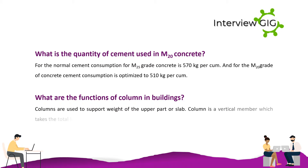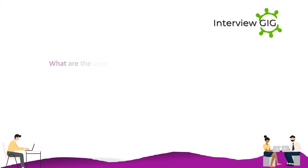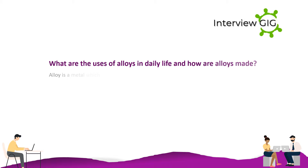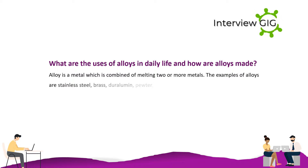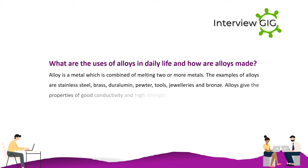What are the functions of columns in buildings? Columns are used to support the weight of the upper part or slab. A column is a vertical member which takes the total load of the beam and slab. What are the uses of alloys in daily life and how are alloys made? An alloy is a metal combined by melting two or more metals. Examples of alloys are stainless steel, brass, duralumin, pewter, and bronze. Alloys give the properties of good conductivity and high strength, and every metal we use in daily life is an alloy.